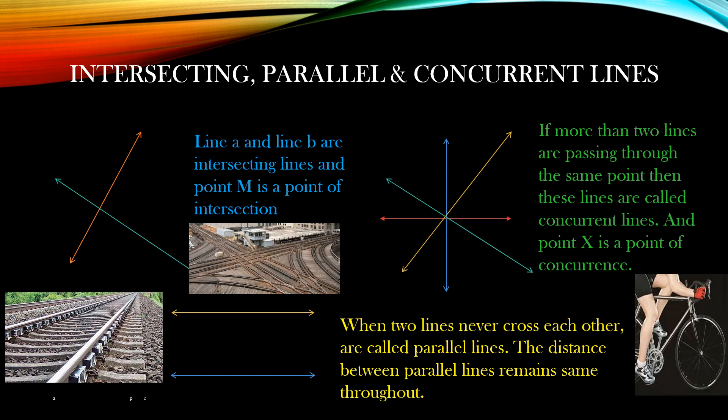In the first left-side picture, you can see two lines crossing each other — crossing each other or intersecting each other. These are called intersecting lines. Here the point M is called the point of intersection.